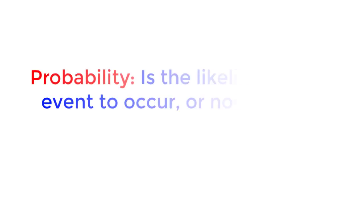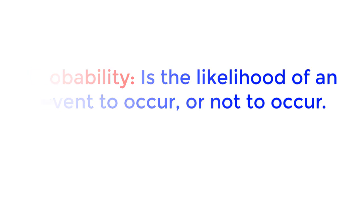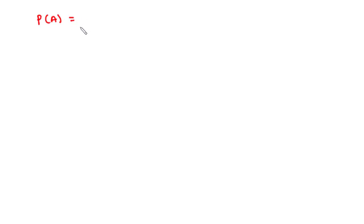Probability is the likelihood of an event to occur or not to occur. Now consider A to be an event. Then the probability of A is the number of favorable outcomes of A divided by the total number of outcomes.